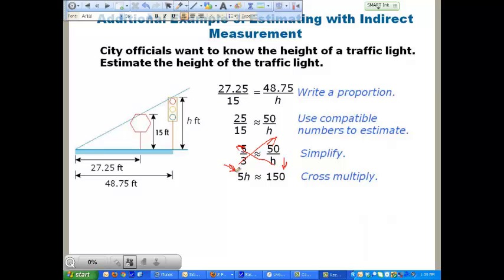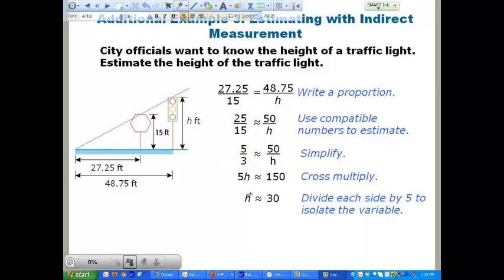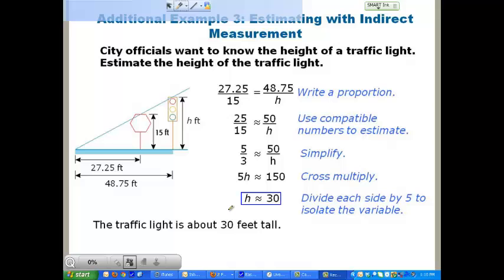Let's go ahead and isolate our variable down here on the bottom now. Divide both sides by five, and when we do, we find that h is about 30. So, the height of that stoplight is going to be about 30 feet off the ground.